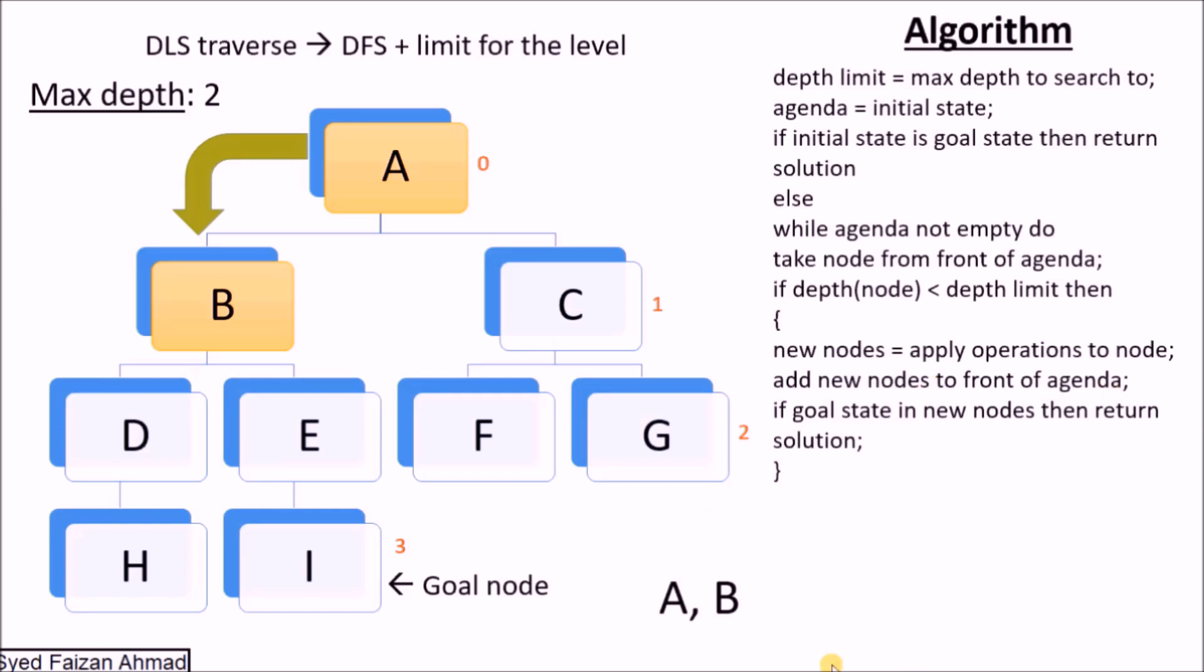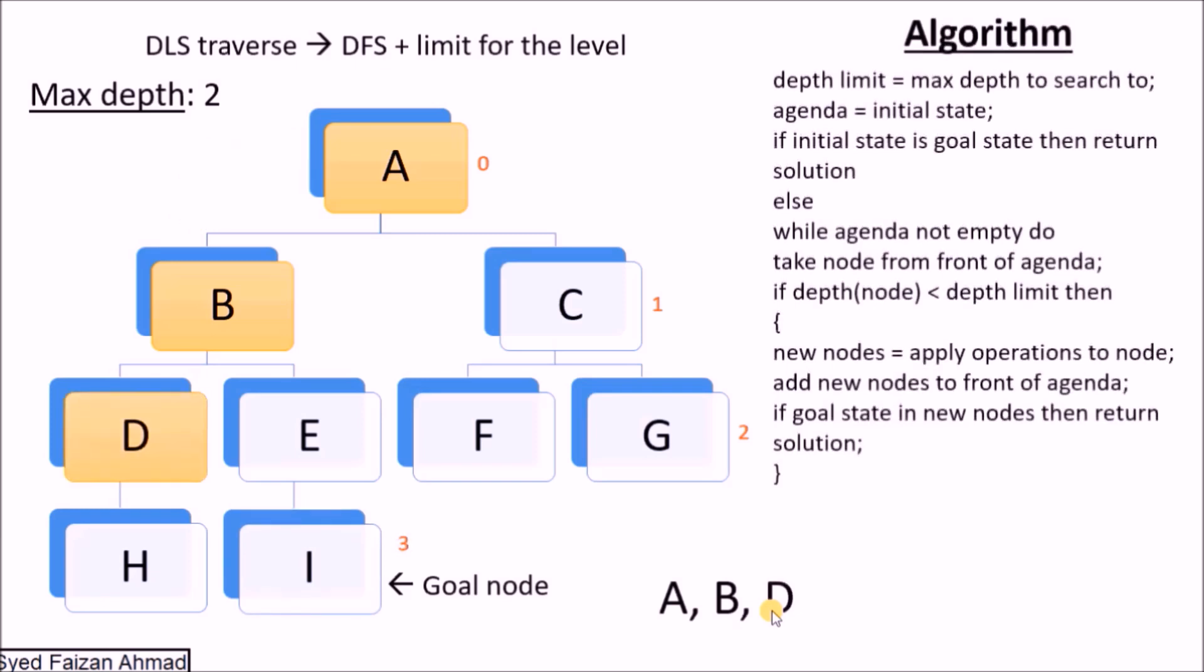We have noted here, you can see I'm noting what I have traversed. And then from B we came to D. As we came to D, now from D we should come to H, but we will not come to H because this is level 3.